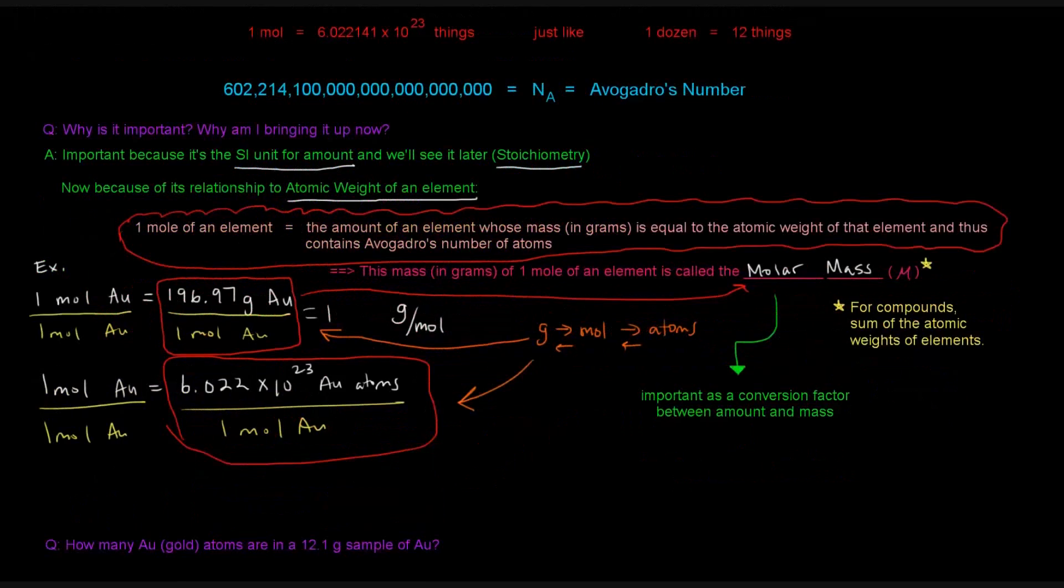So let's see this problem I have here. So how many gold atoms are in a 12.1 gram sample of gold? So we'll start off with the grams, so we'll have 12.1 grams of gold, and we want to convert this all the way over to atoms. The first thing that we need to get rid of is the grams.